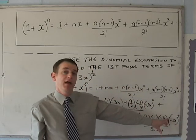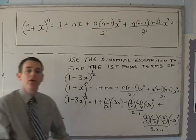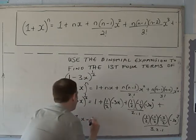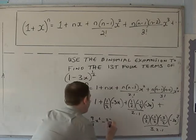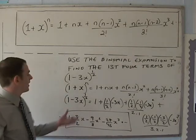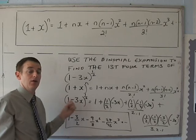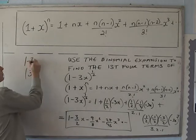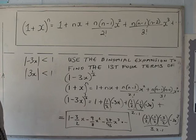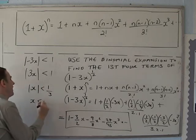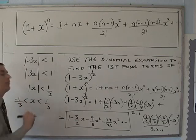Don't forget it's the entire (-3x) that is being cubed. That all works out to 1 minus (3/2)x, minus (9/8)x squared, minus (27/16)x cubed. For what values is that valid? The modulus of (-3x) must be less than 1, and the modulus of (-3x) equals the modulus of 3x, so dividing by 3 gives the modulus of x less than one third — which is the same as x being between plus one third and minus one third.